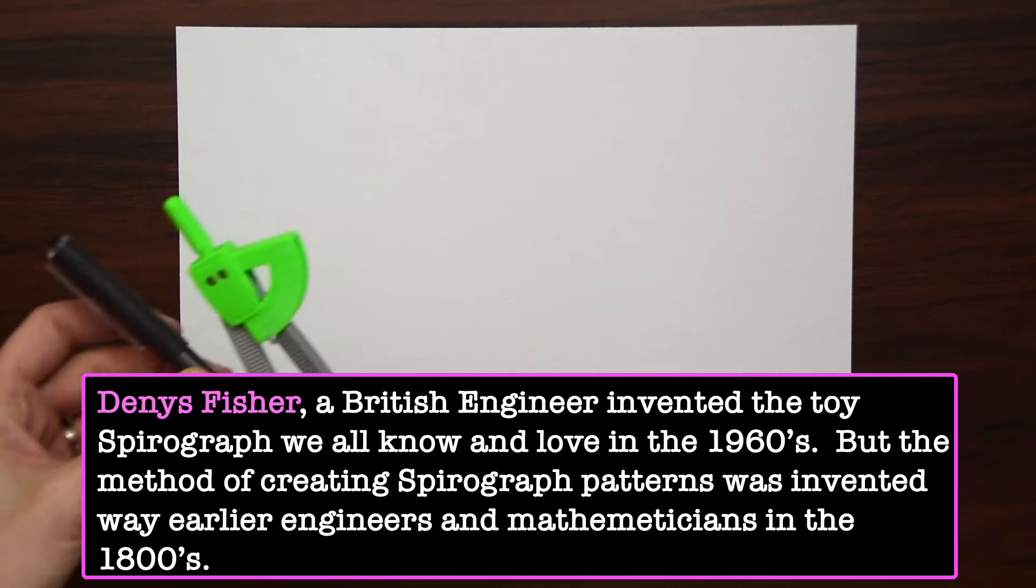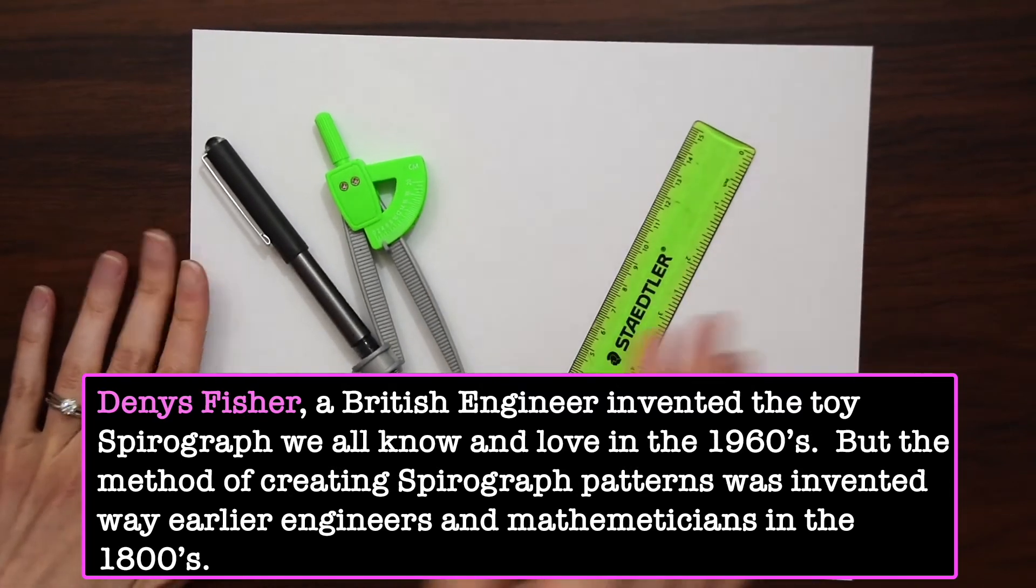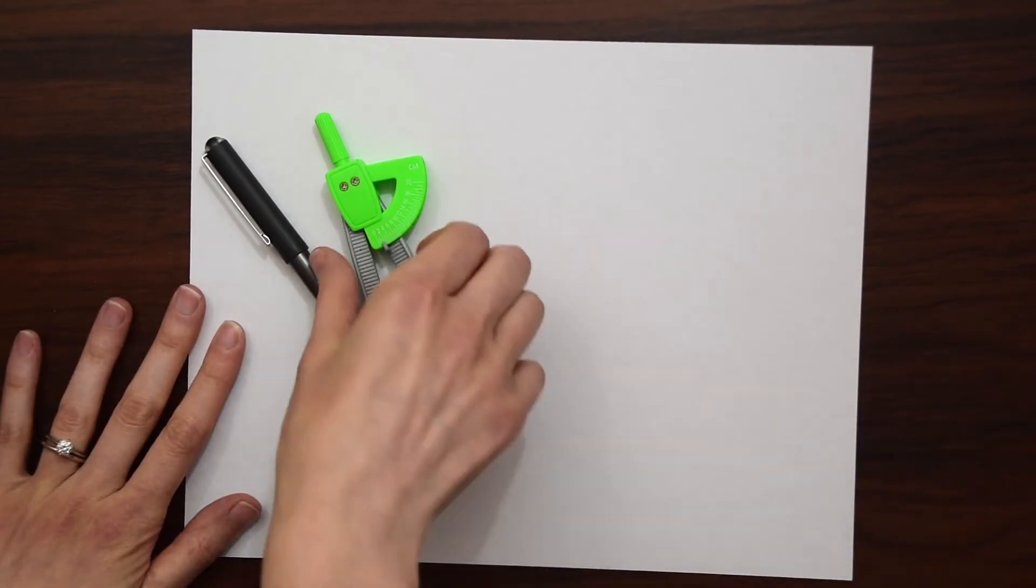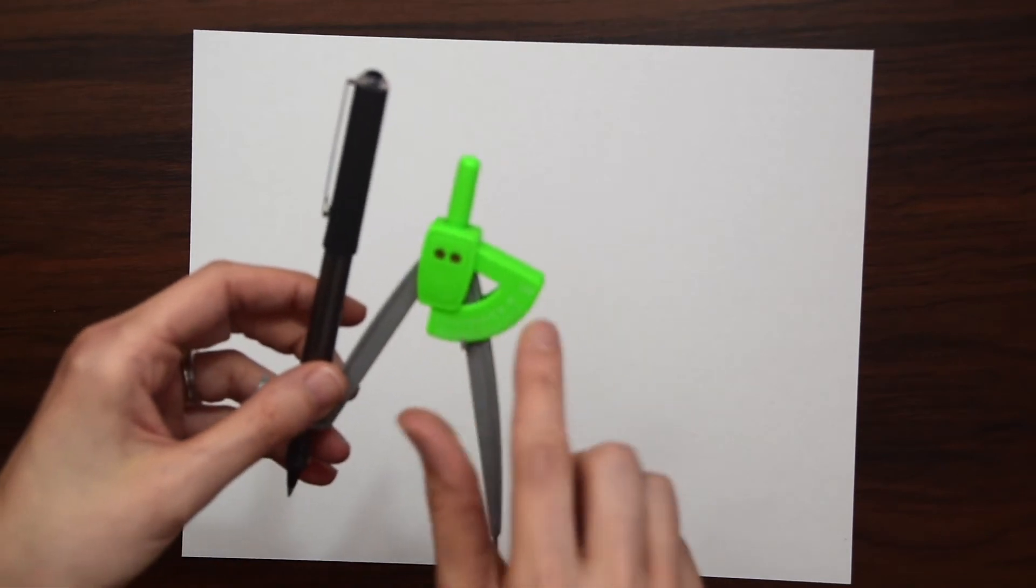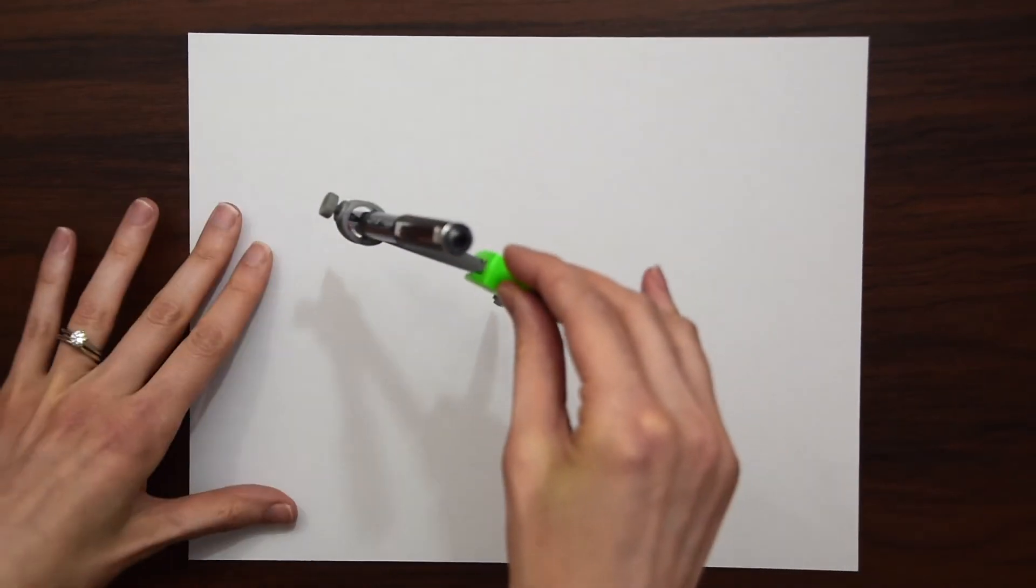To do that we're going to use a compass and a straight edge or a ruler. To start, let's take out our compass and open it to seven centimeters and draw a circle.